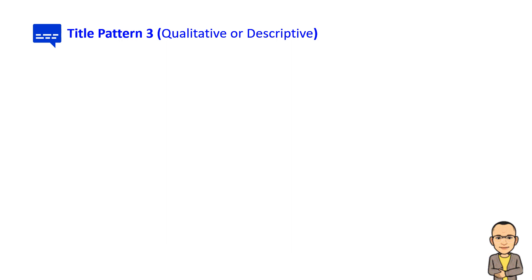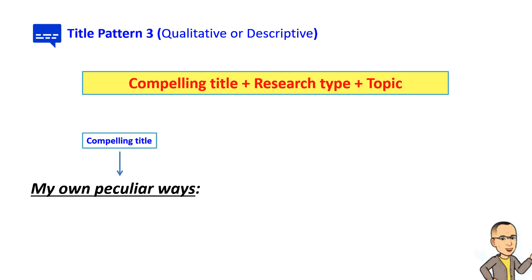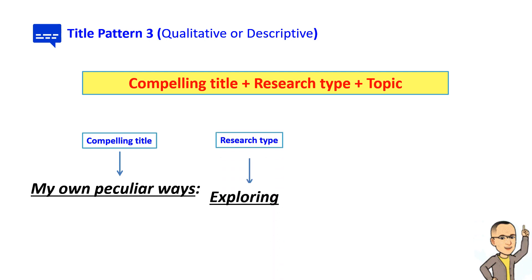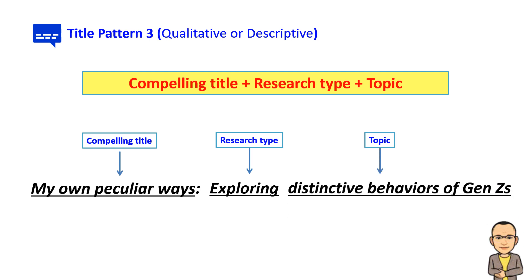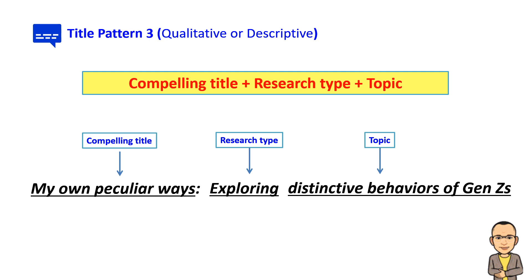The third pattern is well suited for qualitative studies or descriptive research without inferential questions. The pattern consists of: a compelling title + the research type + topic. For instance, the compelling title 'My Own Peculiar Ways' is paired with an exploratory research design focusing on the topic of 'distinctive behaviors of Gen Zs.' This format allows for engaging titles, clear research design identification, and a concise description of the study's focus. Other institutions may not permit the inclusion of a compelling title, so it is advisable to verify the preferred format with your institution before proceeding.